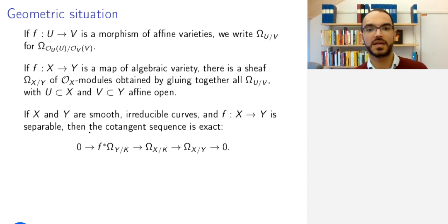And one thing one can show that is highly non-trivial: if X and Y are smooth or reducible curves, and F is separable, then the cotangent sequence is exact. The cotangent sequence that we had previously, translating it into this setting, looks like this.